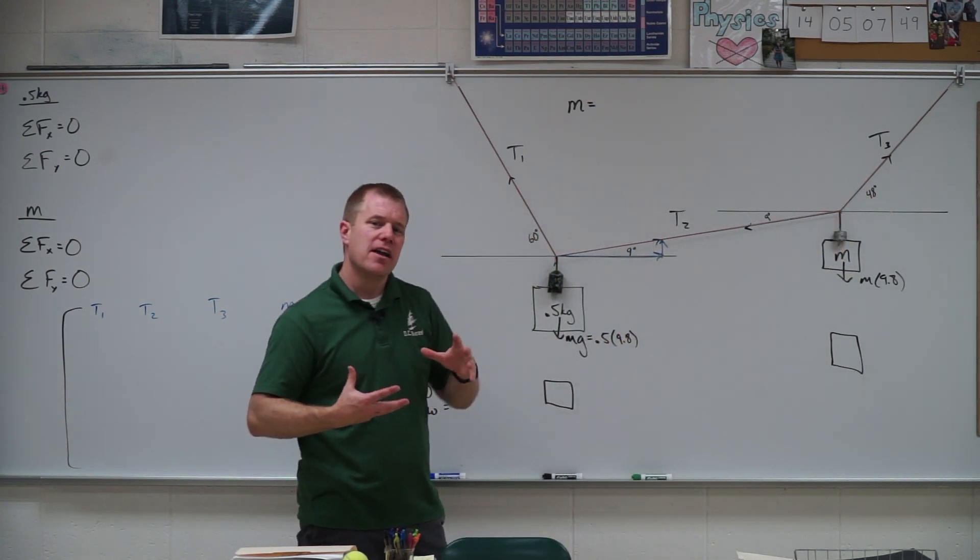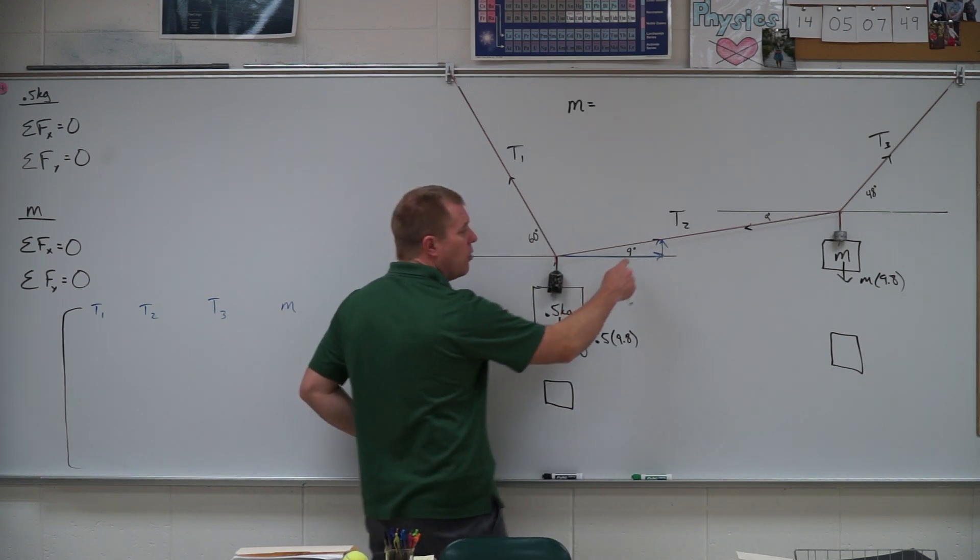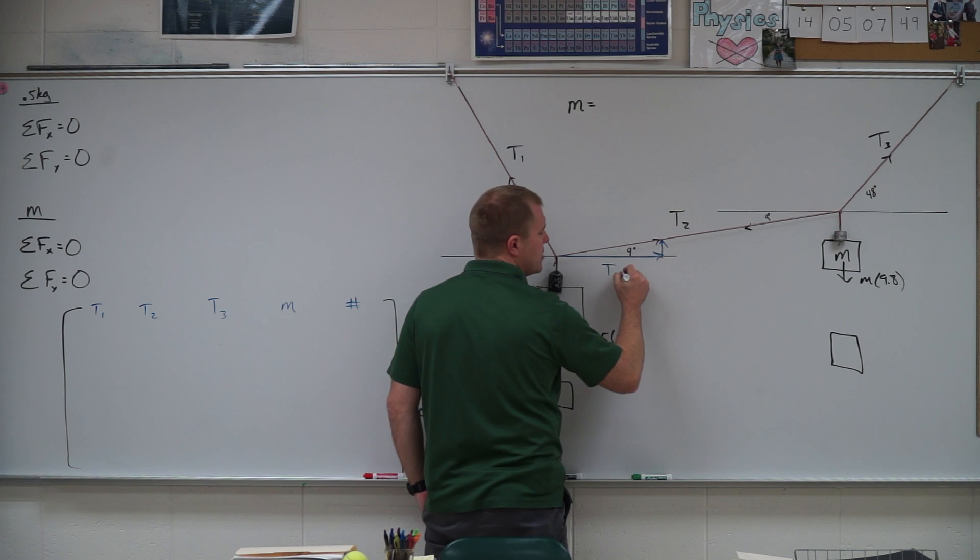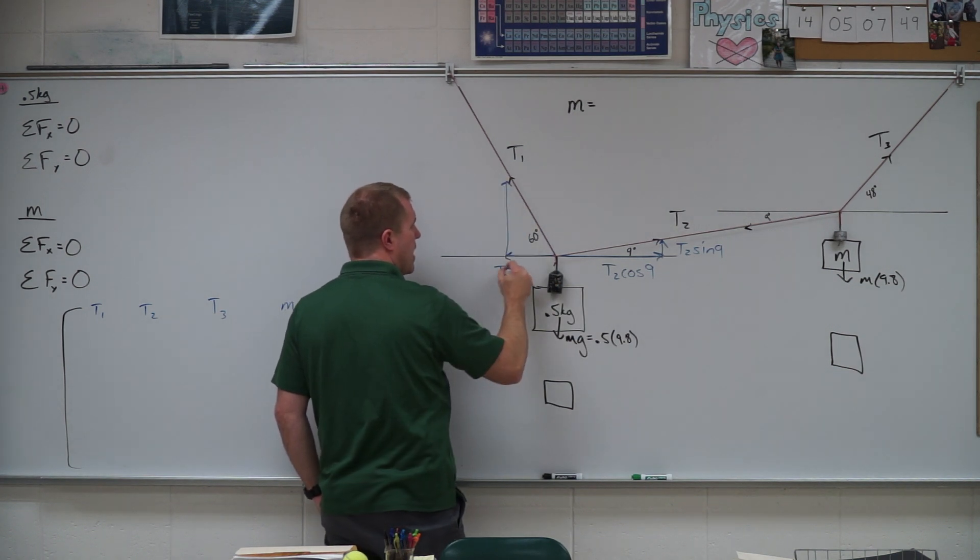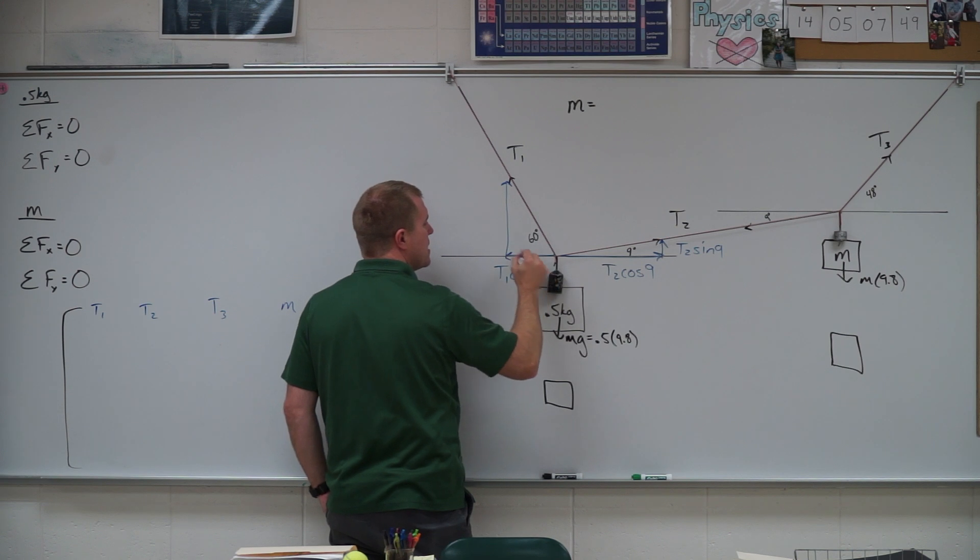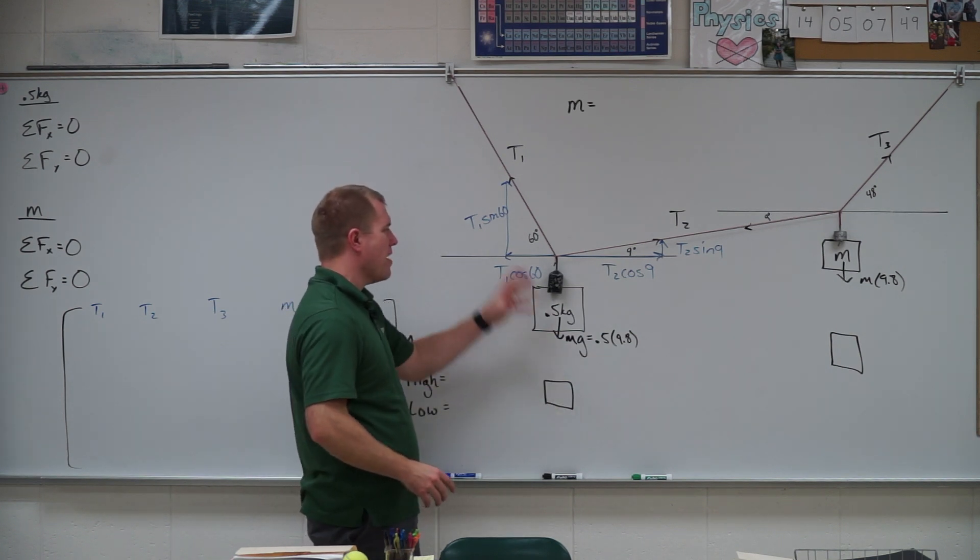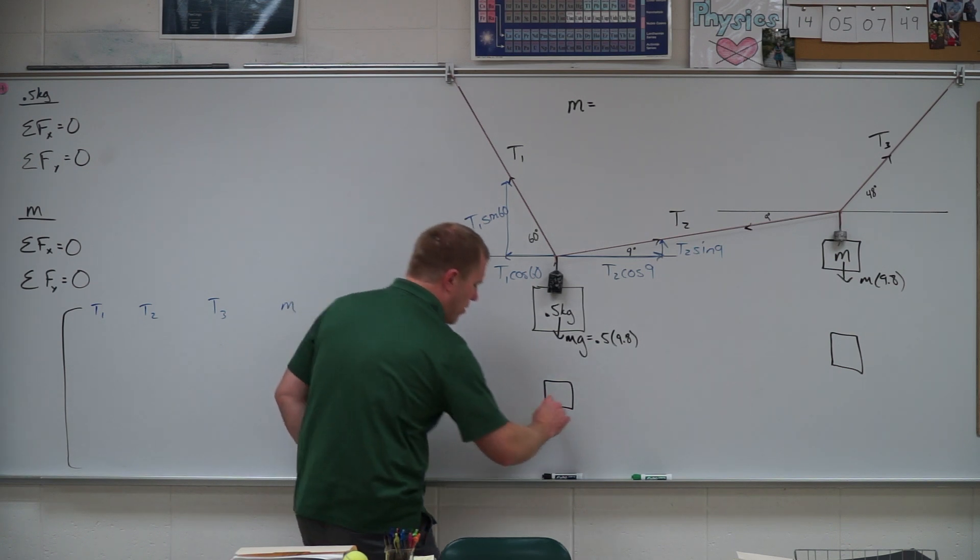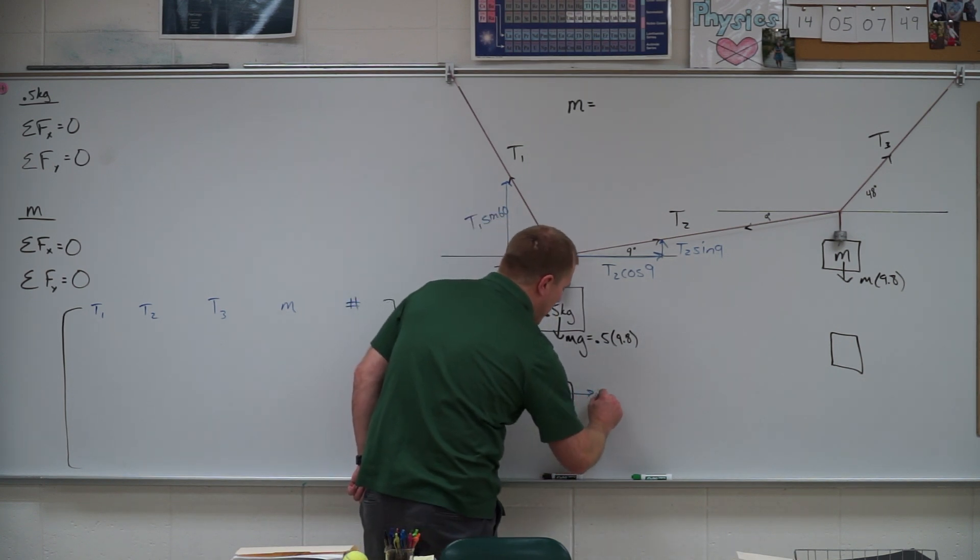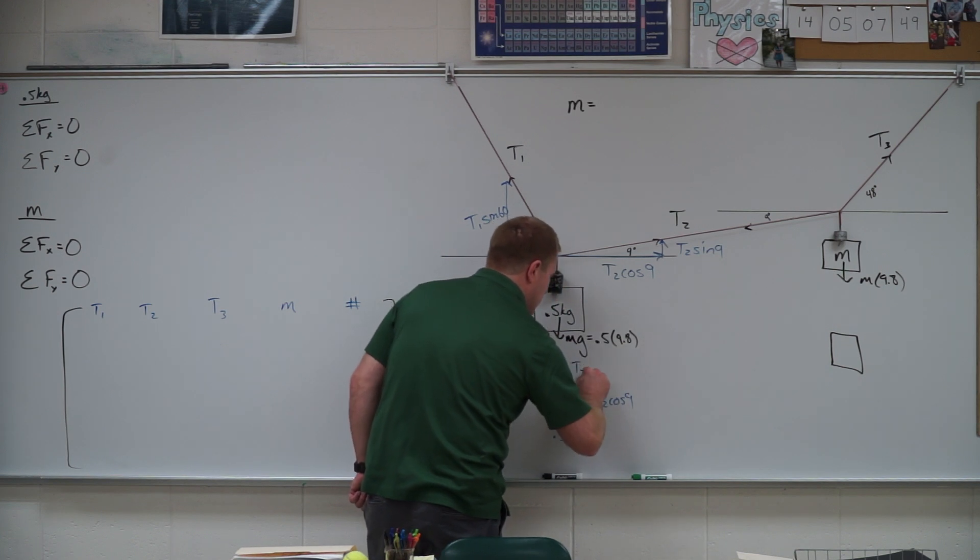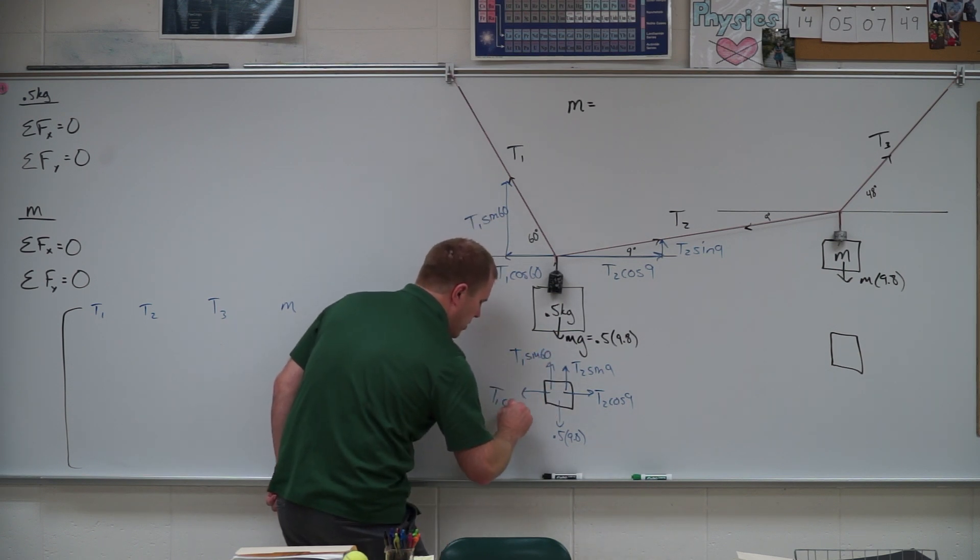And we're going to use that to kind of give us a number and say, all right, how close is the number we calculate for this mass to figure that out? So as I go with this 9 degrees here, so this one here is going to be T2 cosine of 9 and T2 sine of 9. And I do the same thing over here for these components. So I have T1 cosine of 60 and T1 sine of 60.